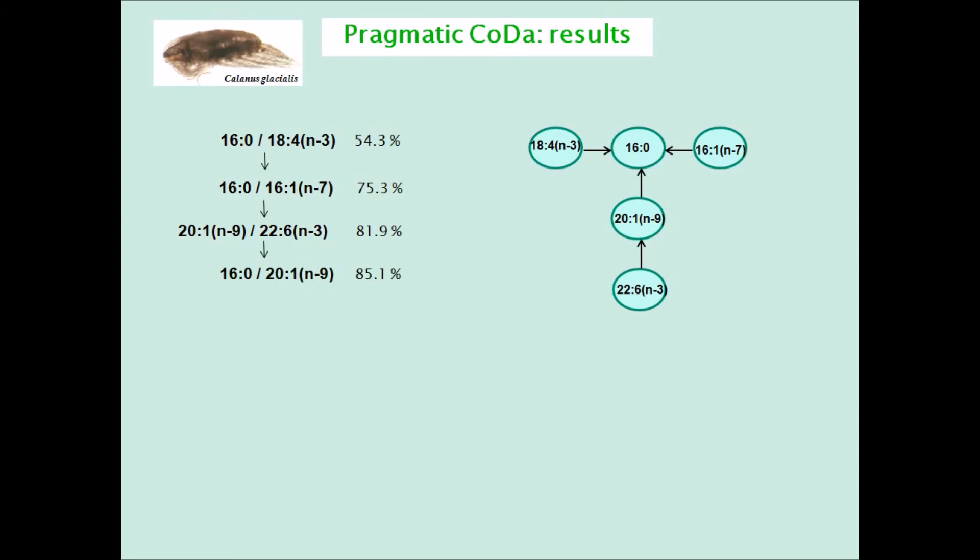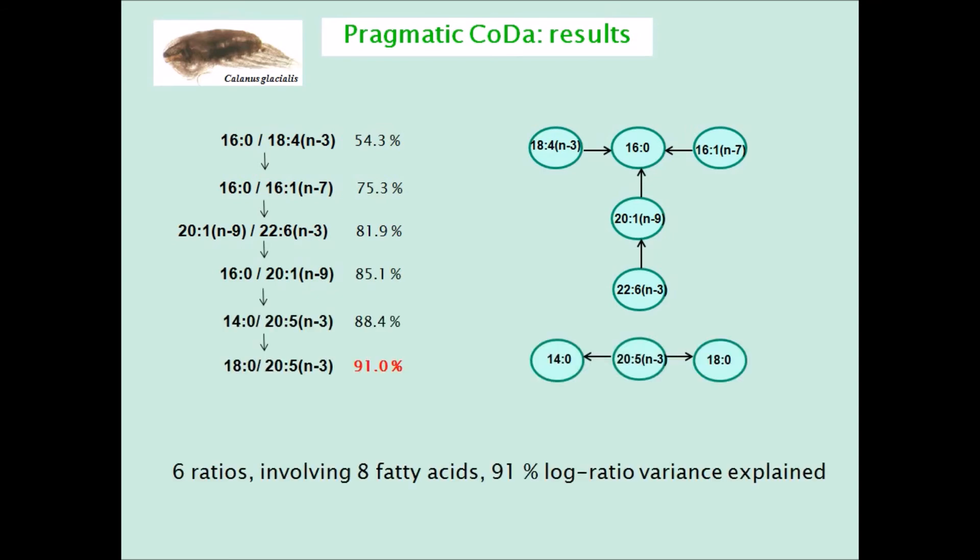Eventually, after six log ratios had been selected, we already had 91% of the variance explained. It would have needed 39 ratios in total, that is, 33 more ratios, to explain 100% of the variance.